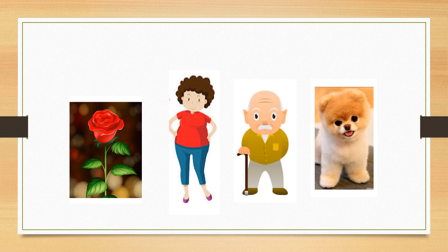Okay students, have a look at the given pictures. When you observe these pictures, which are the words that come to your mind? Maybe, when you looked at the first picture, you thought of a red rose or a beautiful flower. And after looking at the second picture, maybe you thought of a tall girl or a fat girl. In the third picture, you could think he is a fat man or an old man. And after looking at the fourth picture, you might think that it is a cute puppy or a little puppy. So the words that we use to describe these pictures are called adjectives.